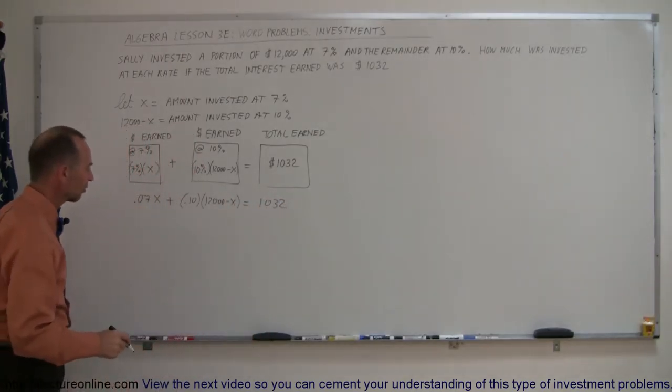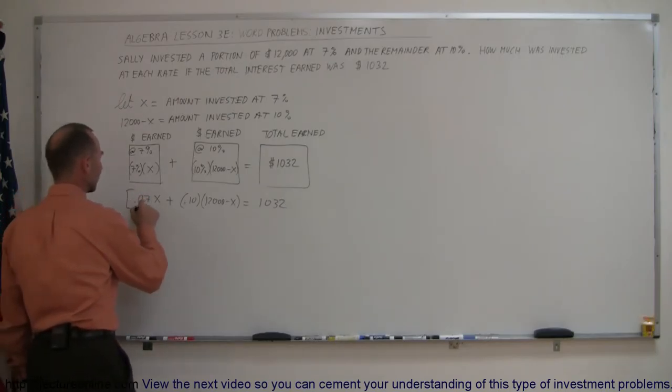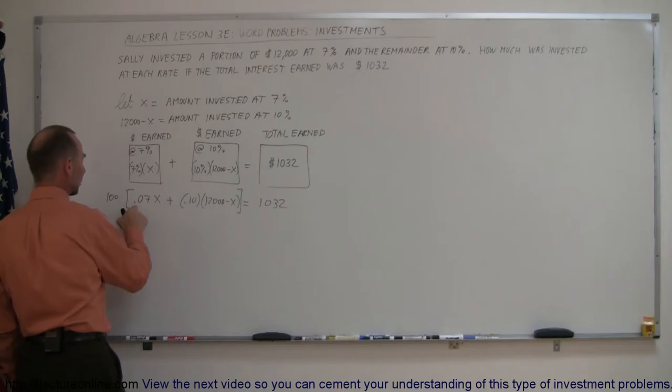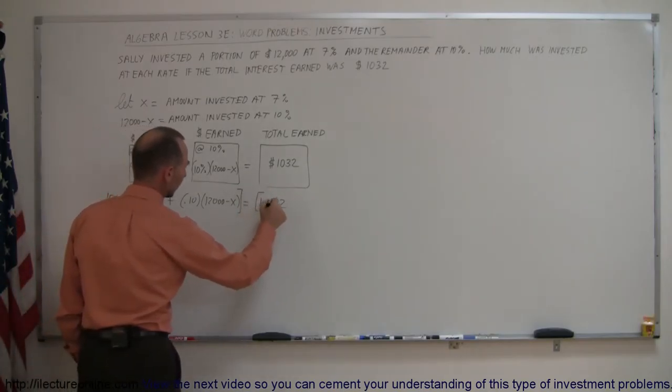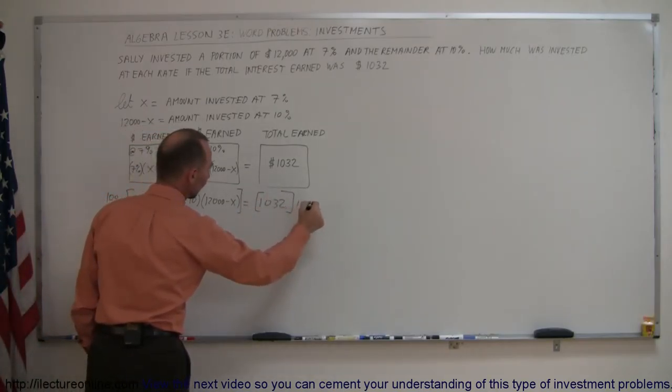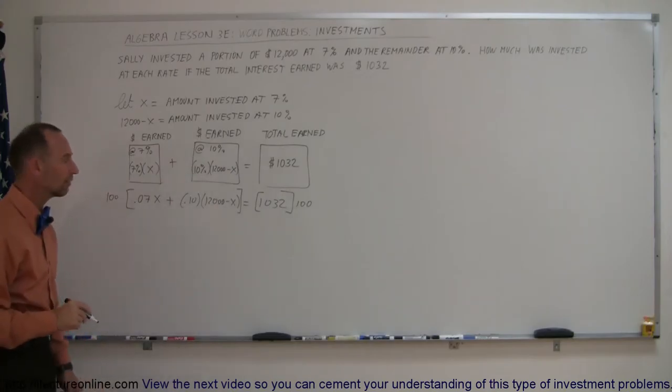The first thing we want to do here is get rid of the decimal places. That means we multiply the left side by 100 because we have to move the decimal place over two places. But we must do the same to every term in the equation, both the left and the right side.